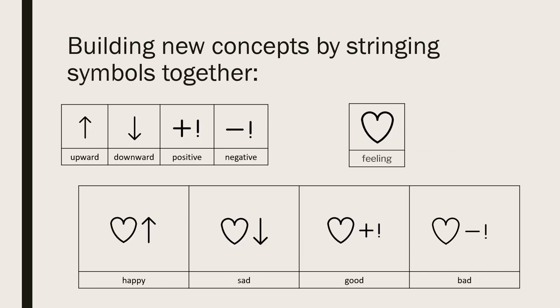Concepts may also be created by appending one basic symbol to another. For example, all feeling words in Blissymbolics have the heart shape at their core. They are then qualified by appending other shapes to represent specific feelings.